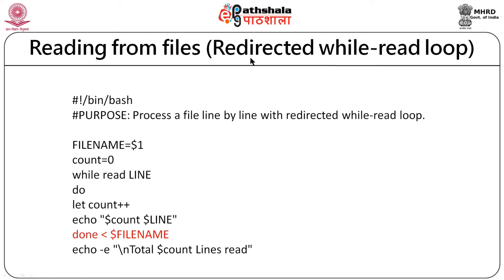The second technique is the redirected while loop. The difference from the piped while loop is in the syntax: rather than piping cat output, the file is given as input to the while loop using input redirection. The while loop begins as before, the same commands execute inside, but the 'done' statement accepts the file name using '< filename' at the end. The output of both the piped and redirected while loop programs is the same; only the syntax differs.